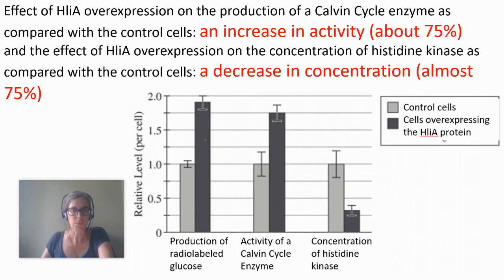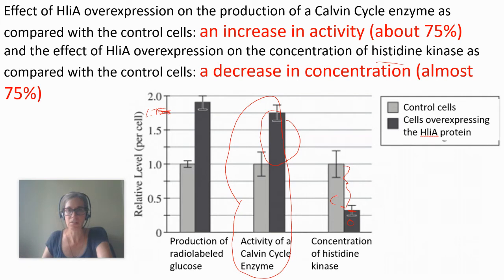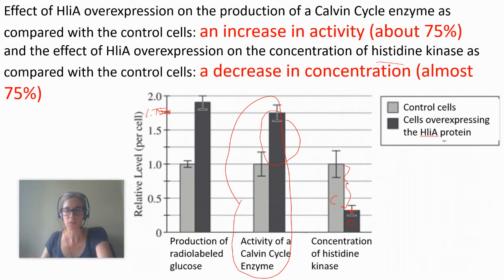The way an AP question might be worded: 'Tell me the effect of HLiA overexpression on the production of a Calvin cycle enzyme compared with a control cell.' The answer would be it increases by about 1.75, so about 75% more. For histidine kinase, it decreases in the overexpressed cells compared to the control — almost 75% less. This graph is not a typical independent variable by dependent variable graph; it's a summary of a bunch of experiments showing control versus experimental group.